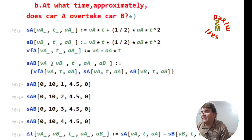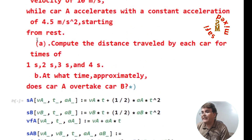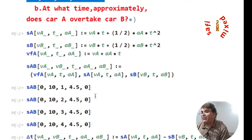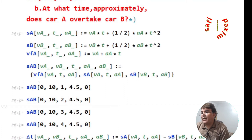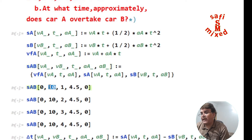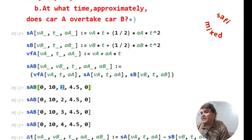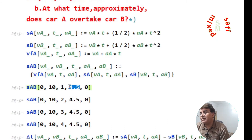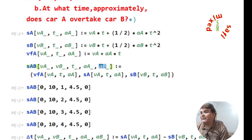Let me run the function sAB for each value of time given in part A, setting the values of the other parameters according to the given data. In the argument of sAB: vA, the initial velocity of car A, is set to zero; vB, the initial velocity of car B, is set to 10 as given; t is the time set equal to 1; aA, the acceleration of car A, is 4.5; and aB, the acceleration of car B, is zero.